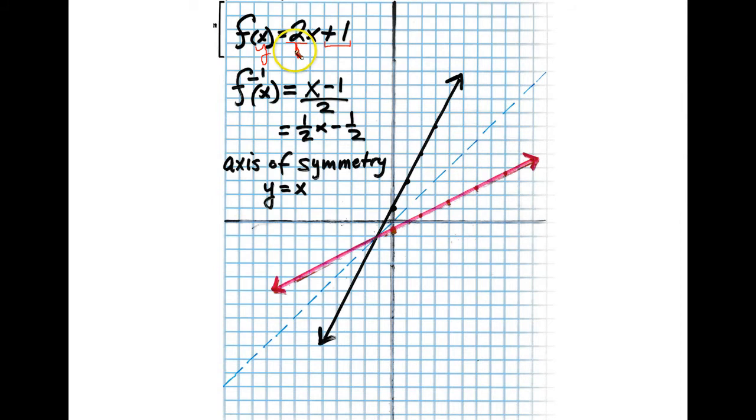So we're going to do our run first, which is a 1, and then our rise, which is a 2. And this gives us a series of points. And then I draw the line.